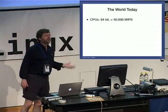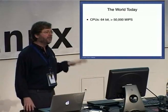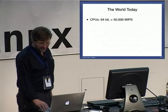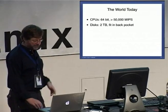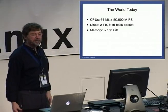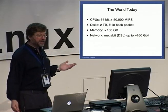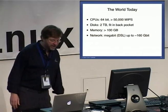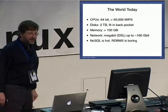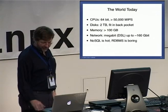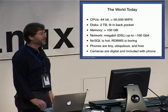In contrast today, CPUs are typically 64 bits. I did a back-of-the-envelope calculation — they're over 50,000 MIPS, from under one MIPS. Commodity disk drives are two terabytes, you can fit in your back pocket. Main memory is over 100 gigabytes — fairly common. At home you get megabit for DSL, and OC3072 is 160 gigabits — that's long haul now. NoSQL is hot. Relational database management systems are boring. Phones are tiny, ubiquitous, and effectively free. And cameras are digital, included with the phone.